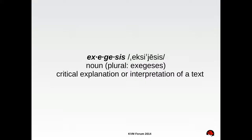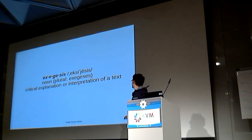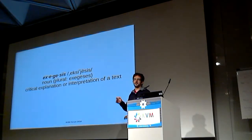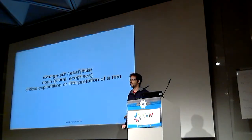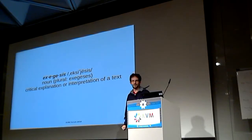The first word is QM — that's easy. The second is exegesis, which means critical explanation or interpretation of a text, usually but not necessarily of a religious kind. In this case, it's obviously code.